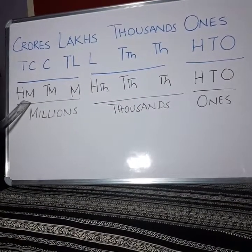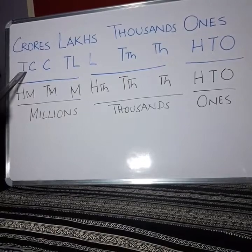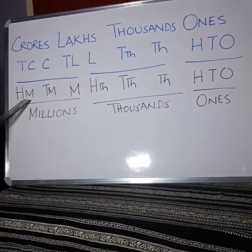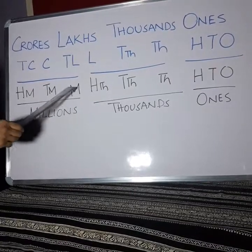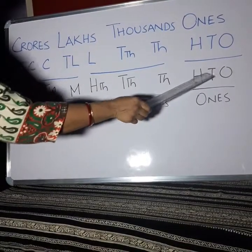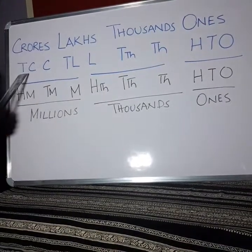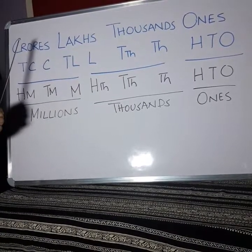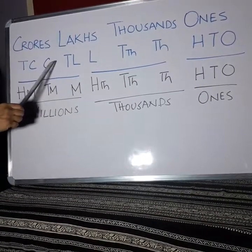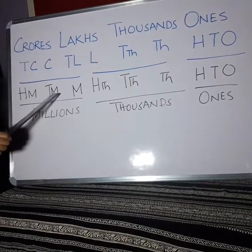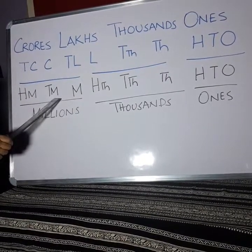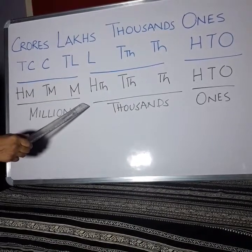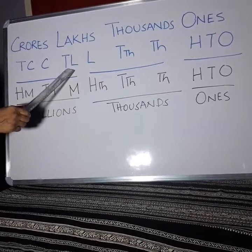And 100,000,000 in the International System is equal to 10 crore in the Indian System. 100,000,000 has 8 zeros, and 10 crores also has 8 zeros. So 1 crore in the Indian System equals 10,000,000 in the International System, and 1,000,000 in International equals 10,00,000 in Indian.